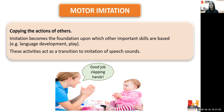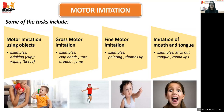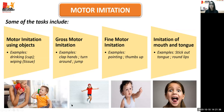Under motor imitation, tasks include motor imitation using objects — examples include drinking from a cup, wiping with tissue, or talking over the phone. We try to use functional actions as far as possible.